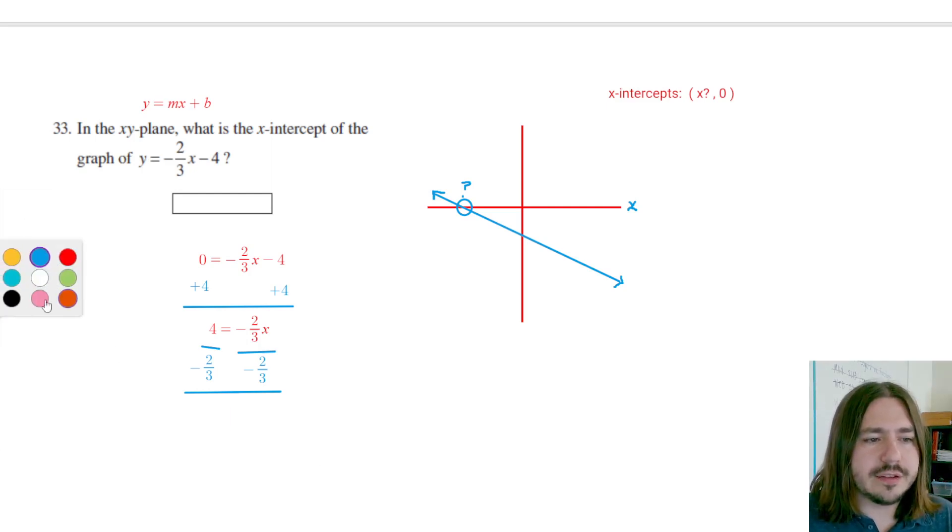So we end up getting x equals negative six. And so what is the x-intercept? It's exactly where we thought it would be. I said maybe negative six, negative eight, somewhere around there. And in fact, it is going to be negative six. So that is our answer for 33. I suppose this would be a grid in problem. So you'd have to bubble in negative and the six. But I guess it's on the computer. So you just probably type it in actually. Anyway, that's going to be number 33.